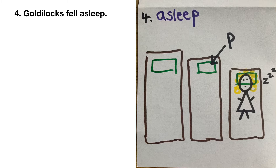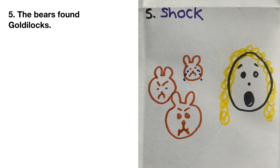What happened next? Turn and tell your grown-up or your teddy. The bears found Goldilocks in baby bear's bed. For the fifth box of my story map, I have drawn the bears' faces looking very angry — they were feeling cross, and baby bear is very sad. And of course Goldilocks is shocked; she did not expect the bears to come home and find her. I have drawn her mouth very wide because she has a shocked expression.